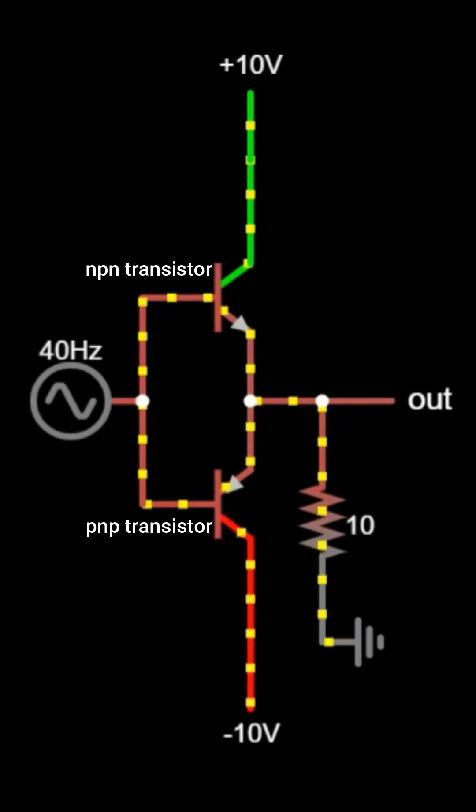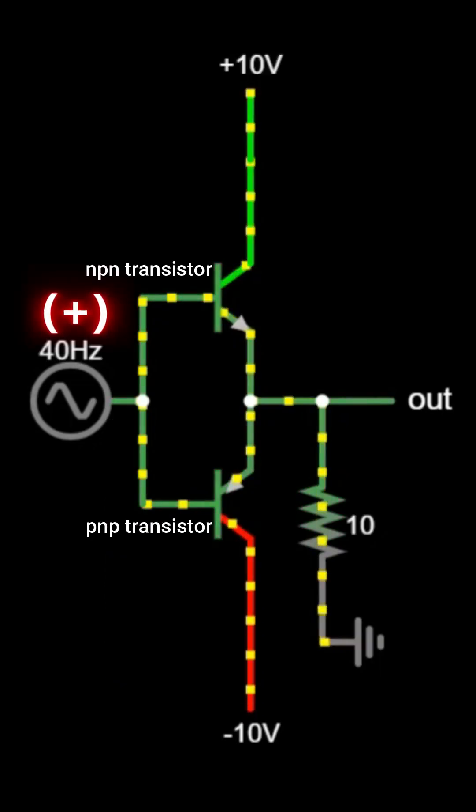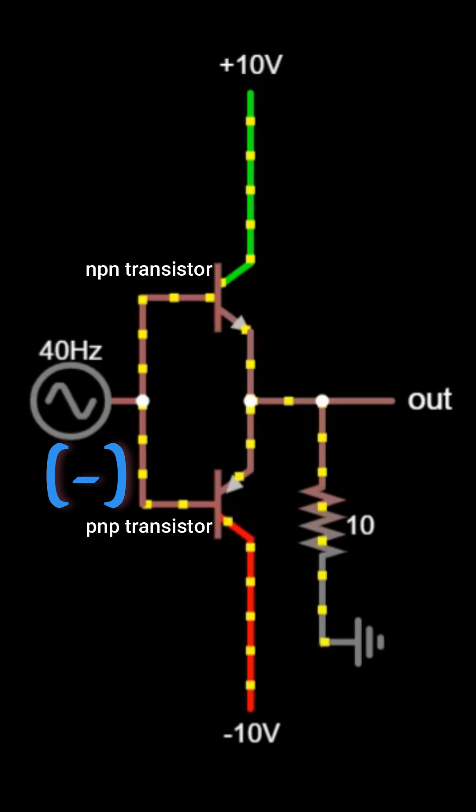When the input signal goes positive, the NPN transistor conducts and supplies current to the load. When the signal goes negative, the PNP transistor conducts and pulls the current in the opposite direction. This alternating action pushes and pulls current through the load.